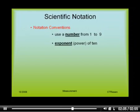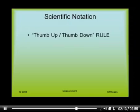The number has to be greater than one and less than ten, so usually between one and nine. And also there is an exponent or a power of ten associated with it. This is where, like factor labeling, we will use what's called the thumbs up, thumbs down rule.